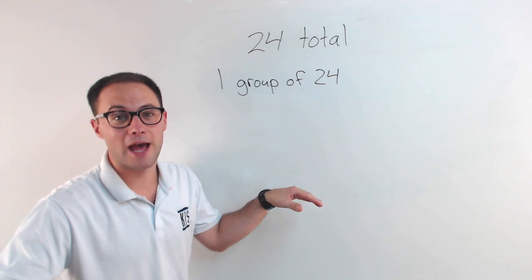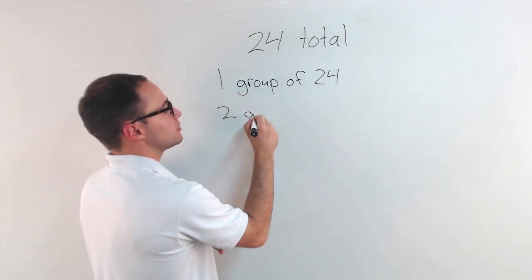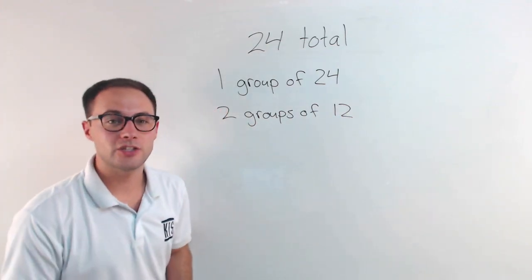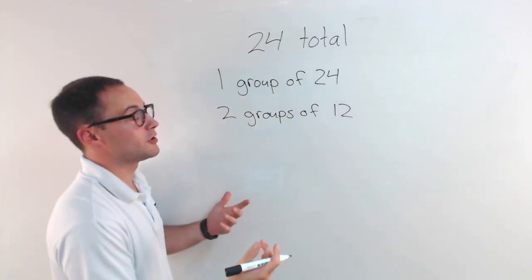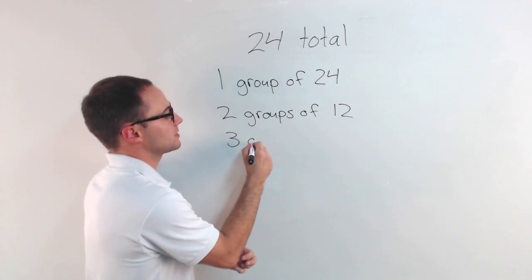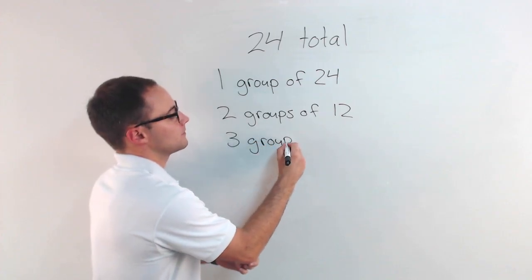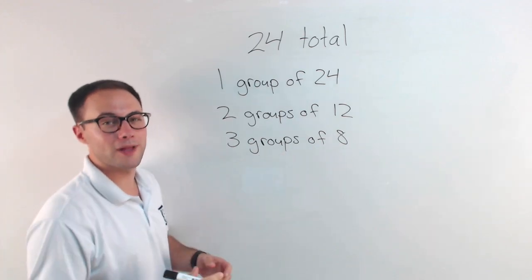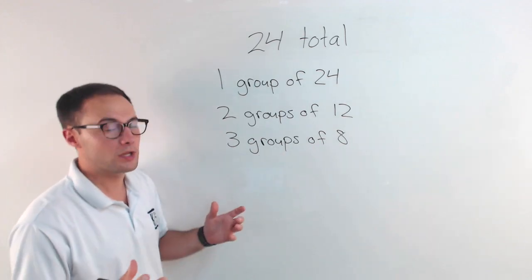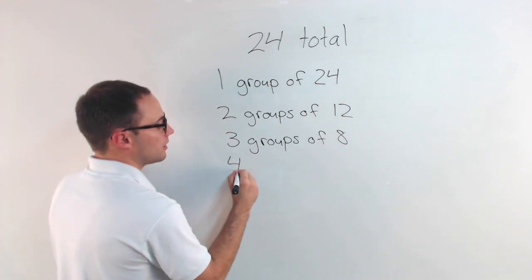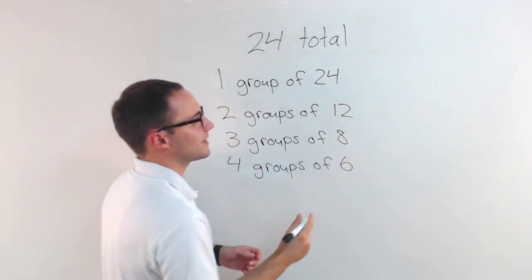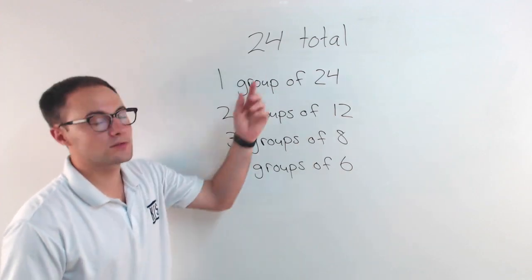I could split them in half. I could do two groups of 12 each. I could do three groups of 8, so 8 per group. That's not terrible. It's still pretty big. I could also do four groups of 6. 4 times 6 is 24.